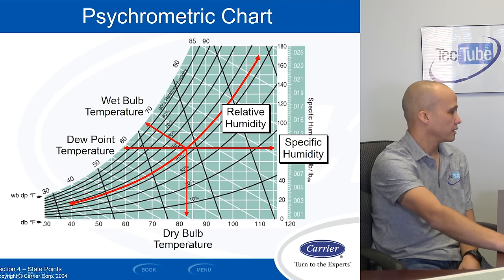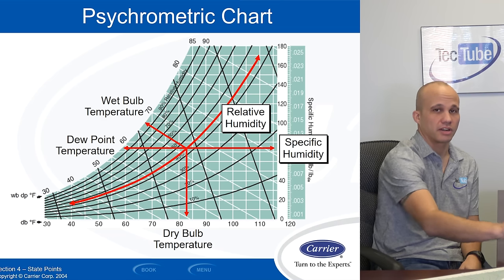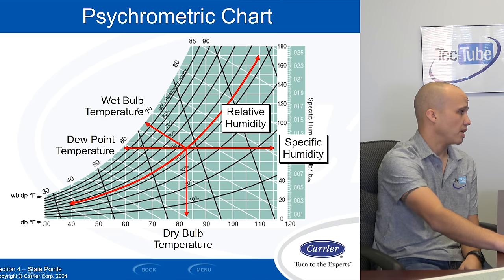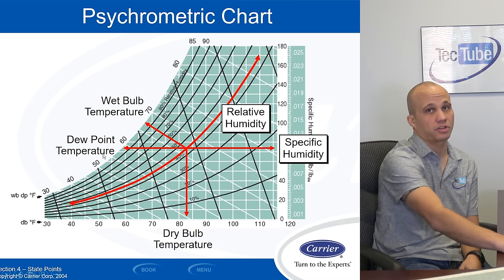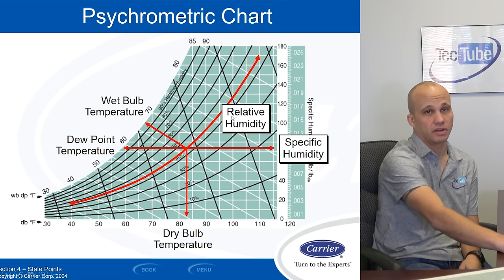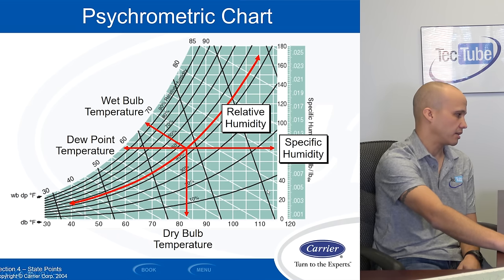So on our chart here, these are the main things that we're going to deal with. There's even more than this. And we'll have advanced training for you guys later on, but this is the basic stuff. So we're going to be looking for wet bulb, dew point temperature, dry bulb temperature, specific humidity, and relative humidity. Those are the five major things that we're going to work with. And maybe we'll dip into enthalpy a little bit here in a minute.